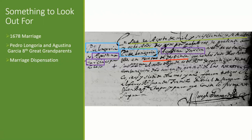Something to look out for with marriage records: this is a 1678 marriage of Pedro Longoria and Agustina Garcia, my eighth great-grandparents. Something to look out for is marriage dispensations. Underlined in red, it says 'virtud de dispensa.' If you don't know what a dispensa is, you may just overlook it. But what that is telling us is that there's a marriage investigation that was done for the couple. This couple was one of my brick walls — I couldn't find their parents. But the marriage record said 'virtud de dispensa,' so I had to go look for that dispensation.